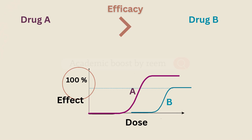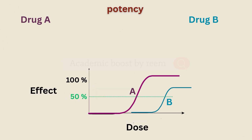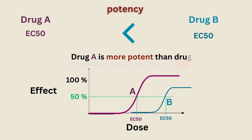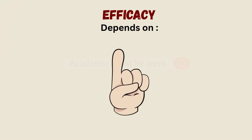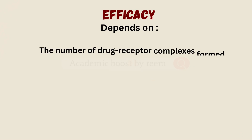Now let's also look at potency. To compare potency, we check the EC50 of each drug — the dose that produces 50 percent of the maximum effect. As we can see, drug A has a lower EC50 than drug B, making it more potent than drug B.